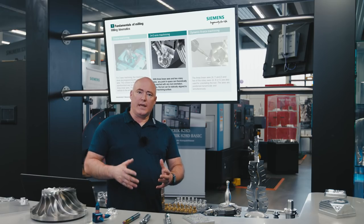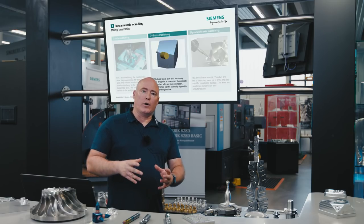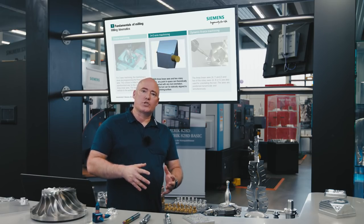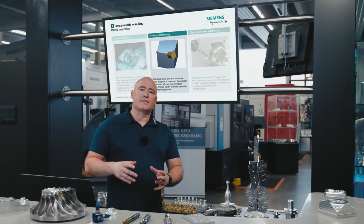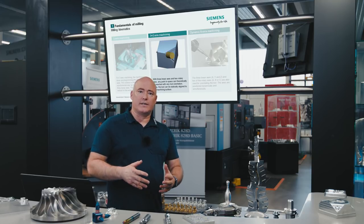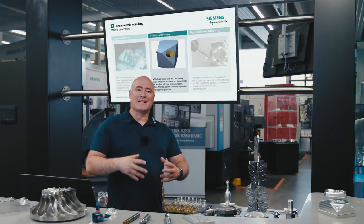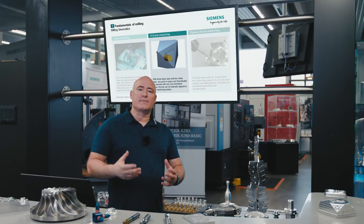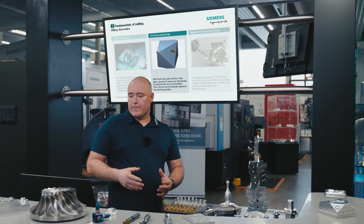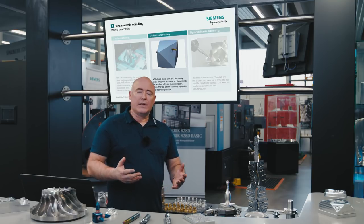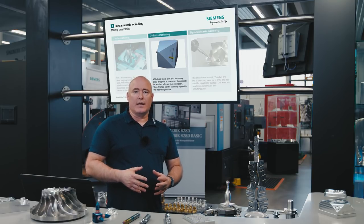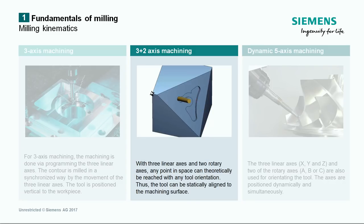In addition to the three main axes, the two rotary axes can be used to reach any point in the working space with the required tool orientation. This is called three-plus-two machining and, as can be seen in the simulation, machining can be done in a swivelled state in the same way as in the non-swivelled state.